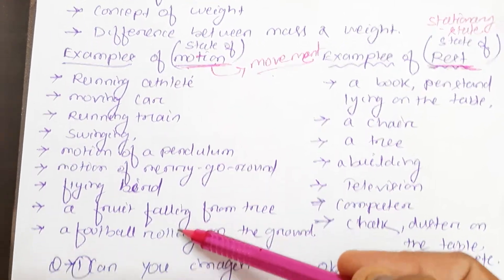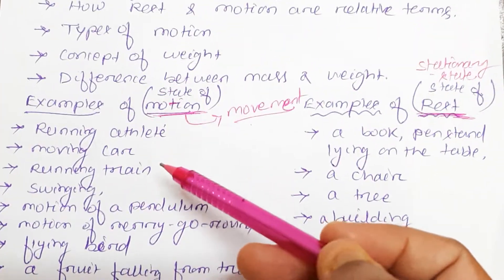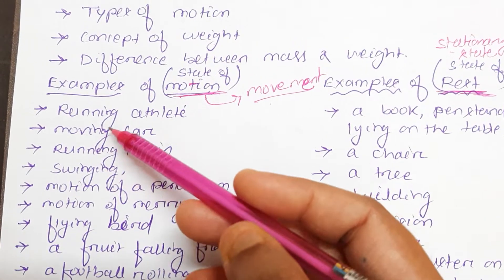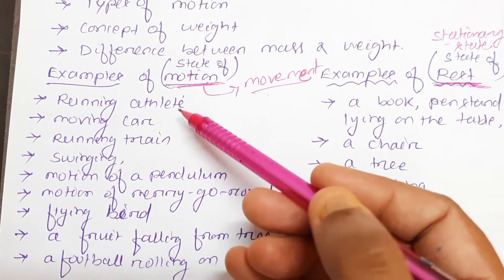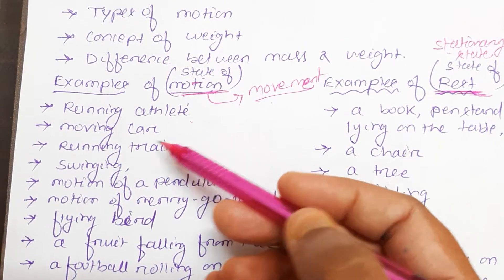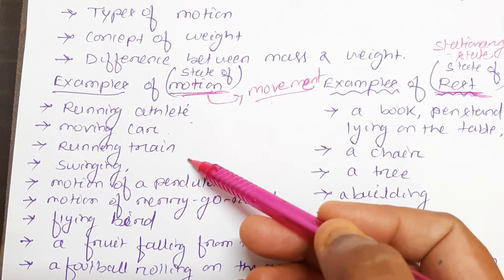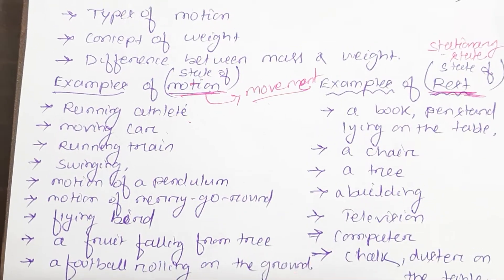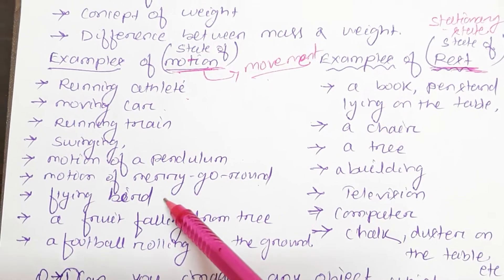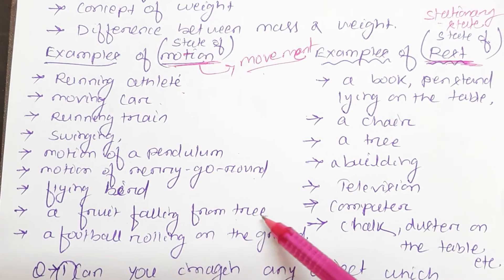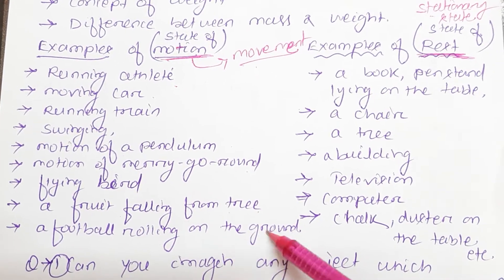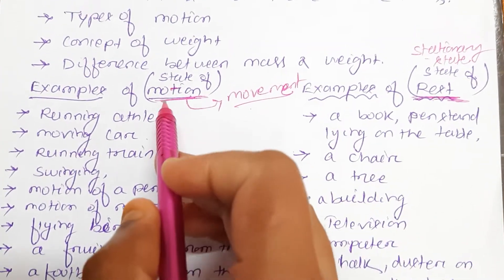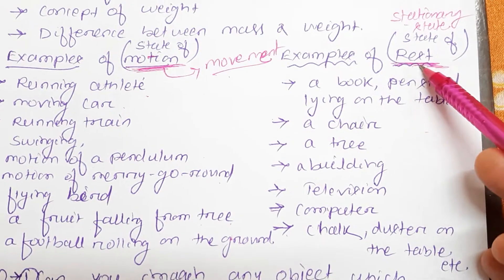Here are a few examples of state of motion: a running athlete, a moving car, a running train, swinging in a swing, motion of a pendulum, motion of a merry-go-round, a flying bird, a fruit falling from a tree, and a football rolling on the ground.